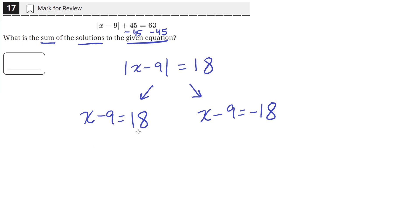So if we solve this, we can just add 9 to both sides. So we'll be left with x equals 27. And here we add 9 to both sides again and we'll be left with x equals negative 9.